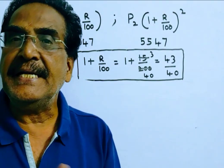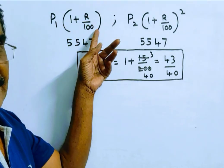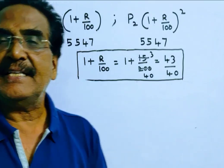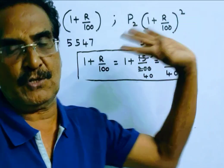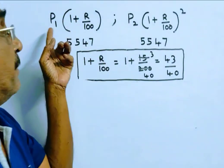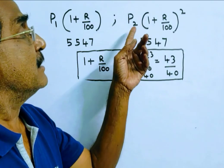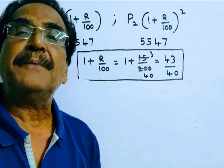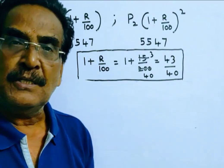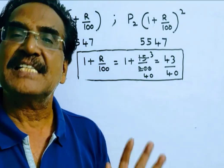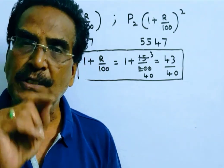The installment paid at the end of the first year is P1 into (1 + R/100), and the installment paid at the end of the second year is P2 into (1 + R/100) squared. Here P1 is the present worth of the installment paid at the end of the first year, and P2 is the present worth of the installment paid at the end of the second year. So P1 plus P2 equals the present worth, that is, the sum borrowed.